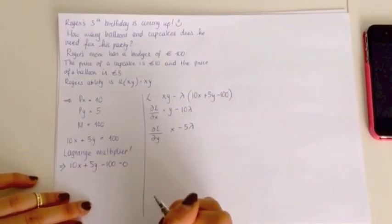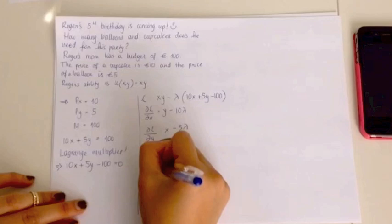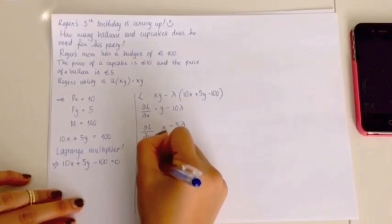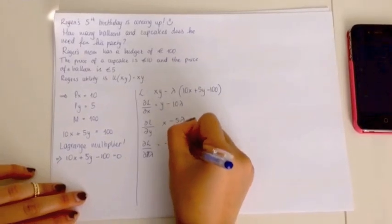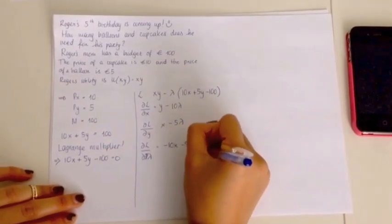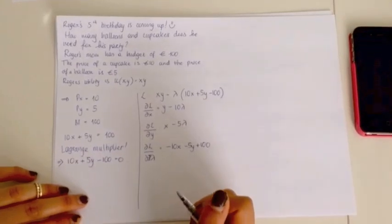And then again, finally, for Lambda. The partial derivative of L according to Lambda equals minus 10X minus 5Y plus 100. Because you have to remember to take into consideration the minus sign that is in front of the Lambda.